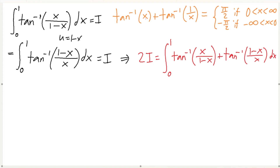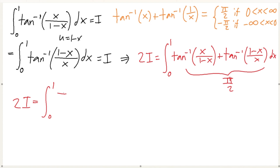The sum of the two arctangent arguments equals π/2, so the integrand simplifies to π/2. Therefore 2i equals the integral from 0 to 1 of π/2 dx, which gives 2i = π/2, and our answer is π/4.